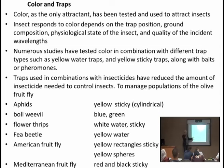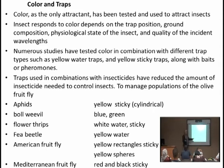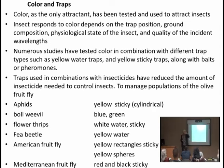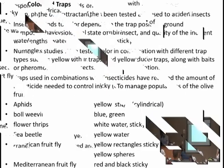الأفيد ينجذب للـ yellow sticky trap، بينما البول ويفل (boll weevil) ينجذب للأزرق والأخضر حسب الـ visual cues لديه. للـ boll weevil تُستخدم المصائد الزرقاء أو الخضراء. يوجد white water sticky traps للـ flea beetles، وyellow water traps للـ American fruit fly، وyellow spherical traps أيضاً للـ fruit fly، وblack sticky trap لكل منها انجذاب لموجة ضوئية معينة.